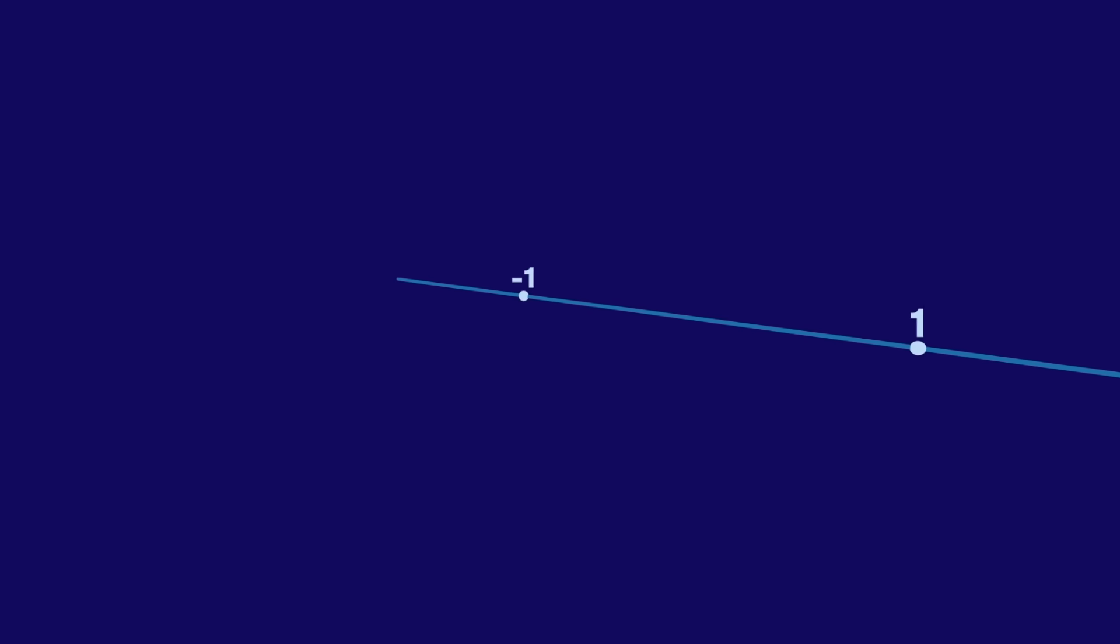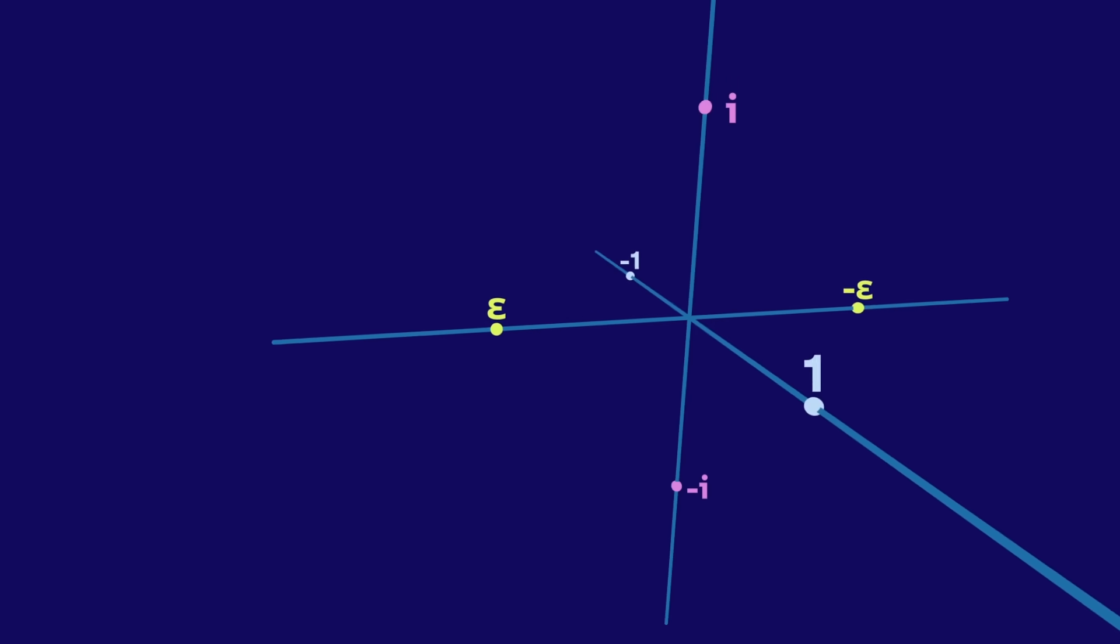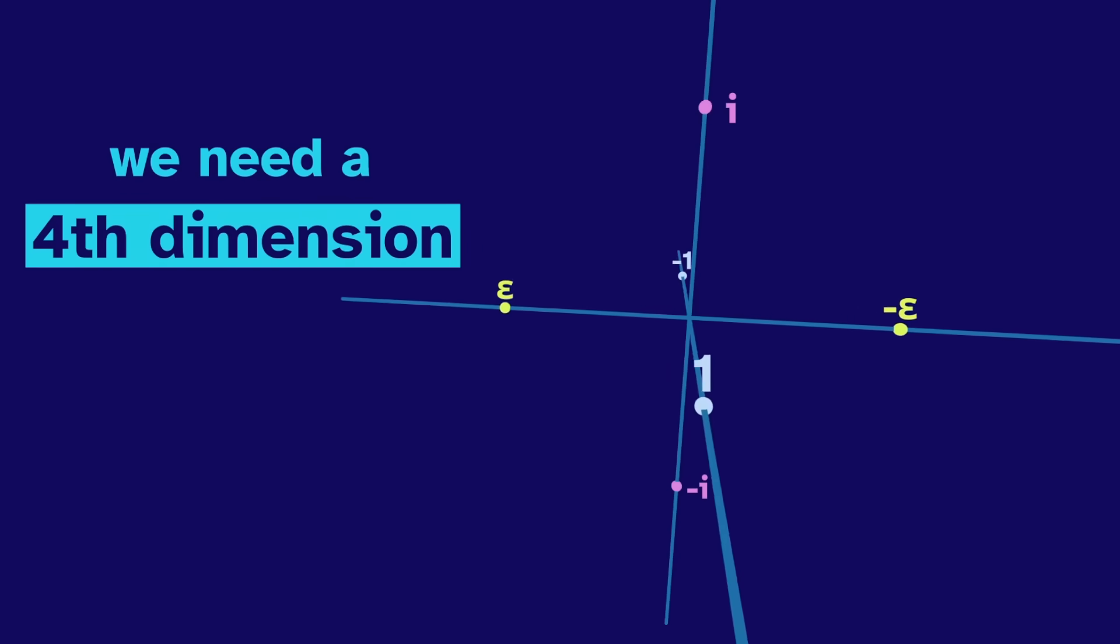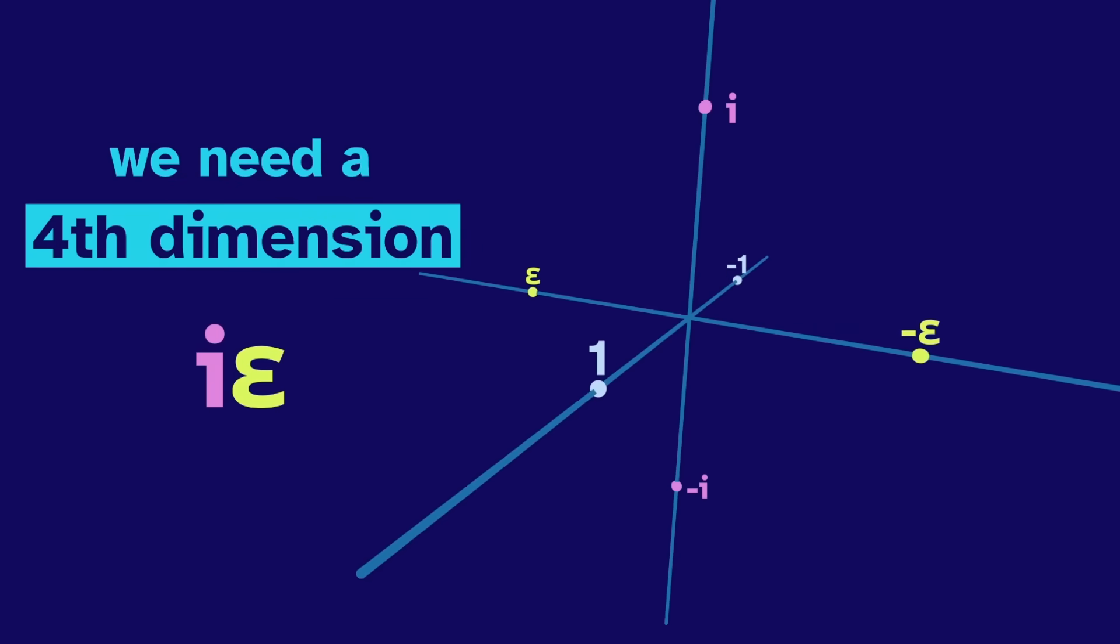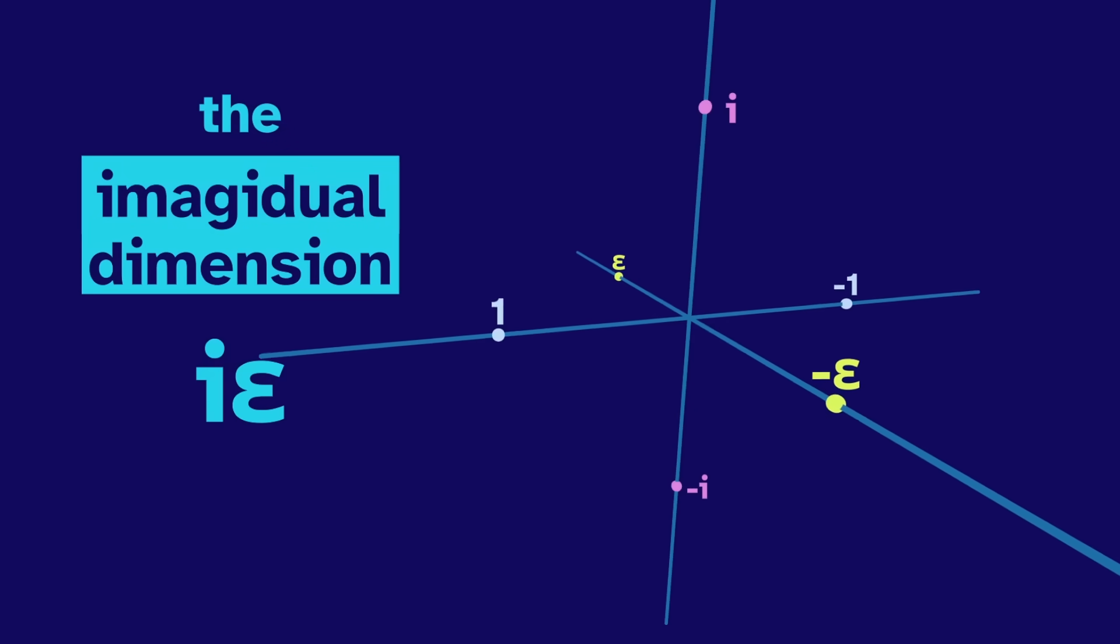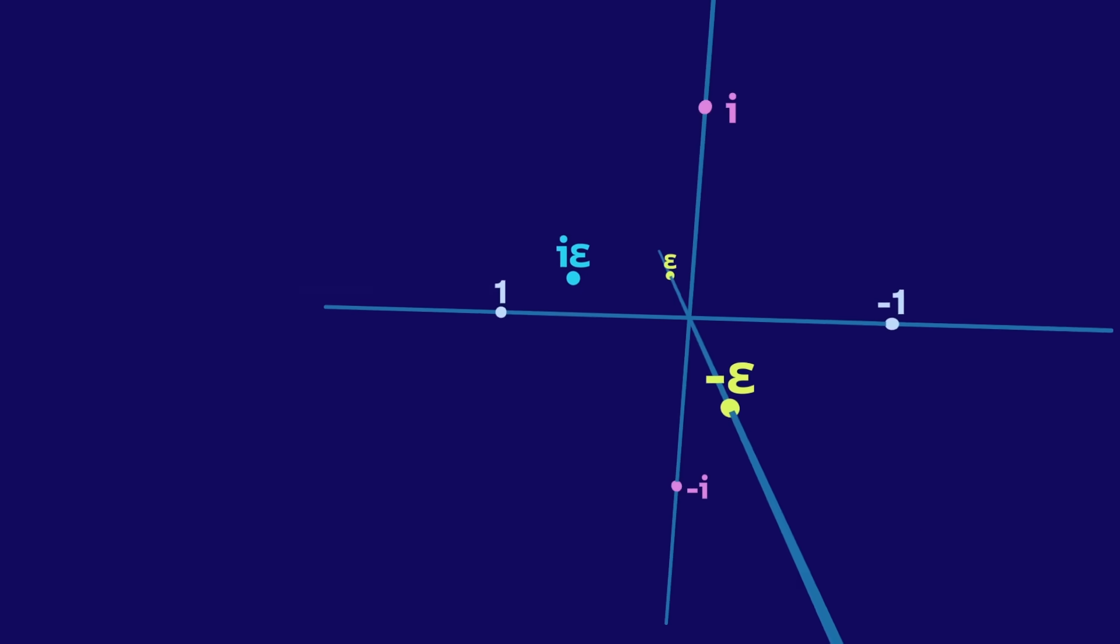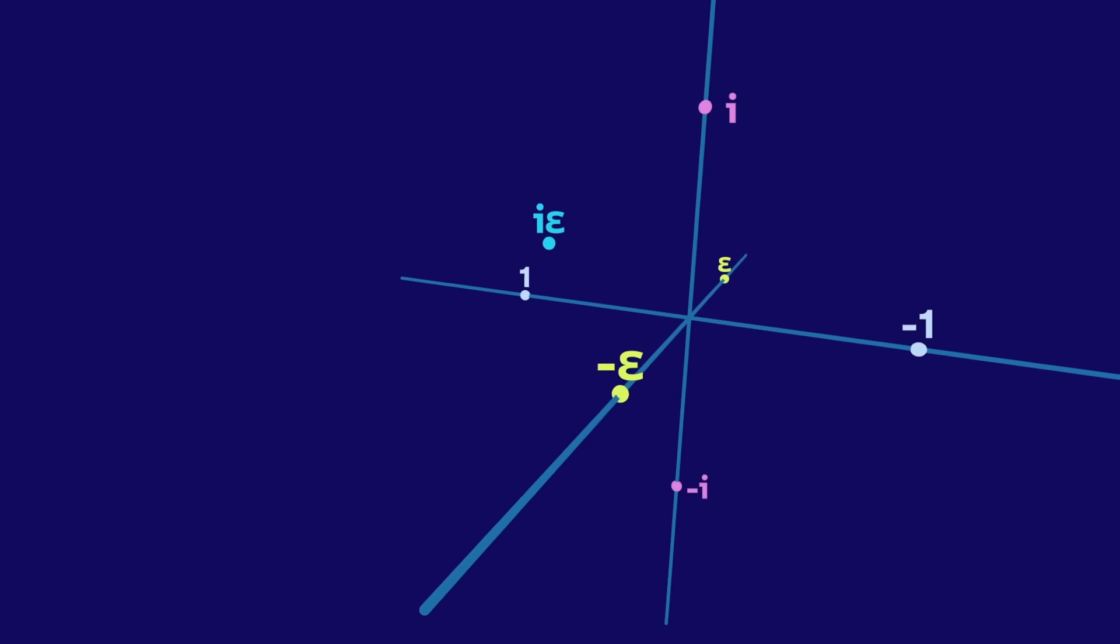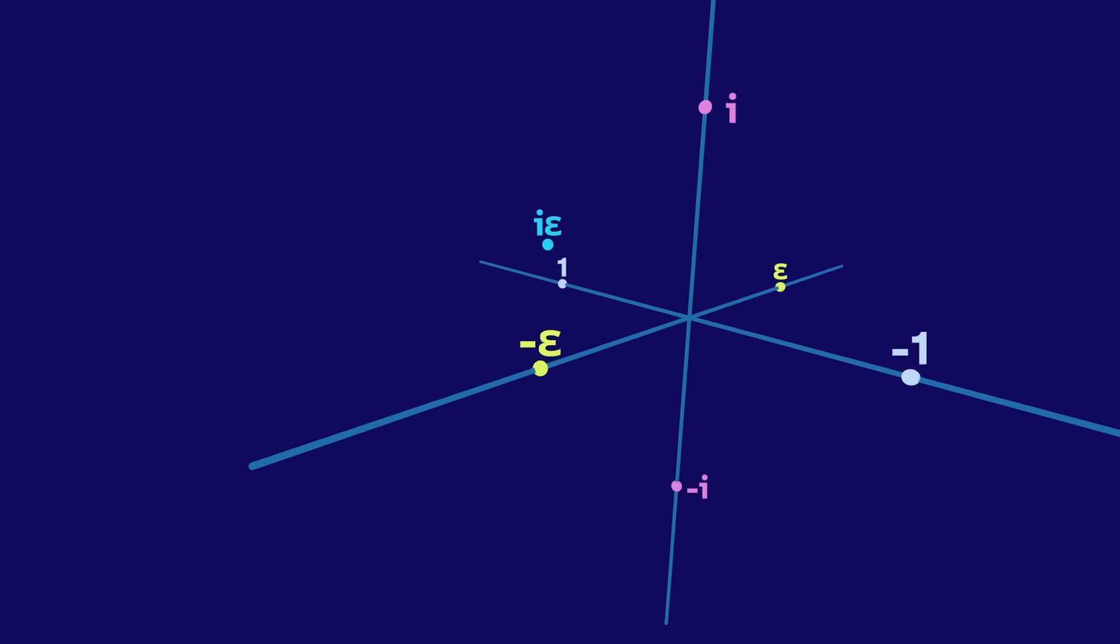We'll use a real dimension, an imaginary dimension, and a dual dimension. But this isn't enough. We need a fourth dimension for i times epsilon, the imagidual dimension. But wait, why? Why can't we just define i times epsilon to be within these three dimensions? Let's try it.